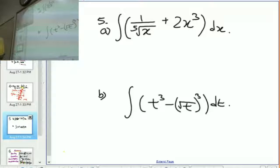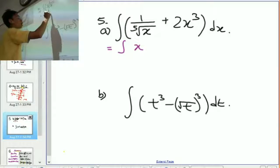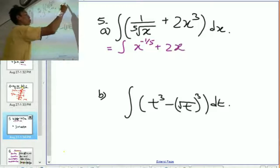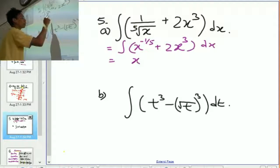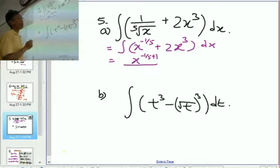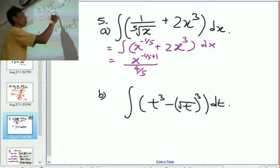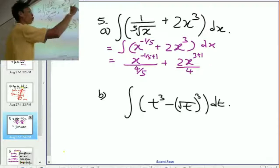Now, let's try question number 5. The first step is to rewrite this as x to the power of negative 1 fifth plus 2x to the power of 3 dx. So, x negative 1 fifth plus 1. Negative 1 fifth plus 1 is actually 4 fifth. So, 4 fifth down here plus 2x to the power of 3 plus 1 is 4. So, divided by 4 plus c.